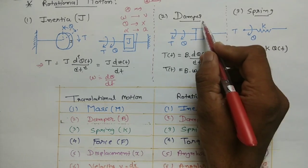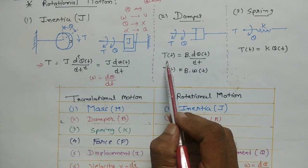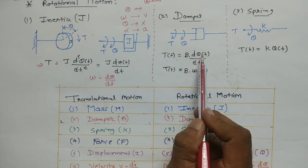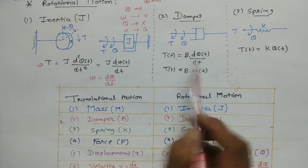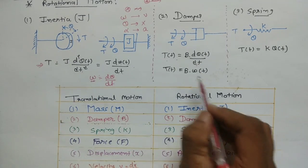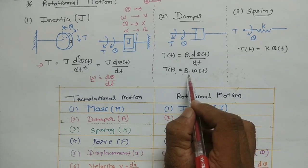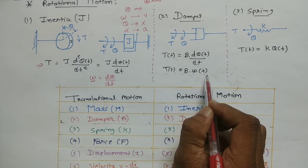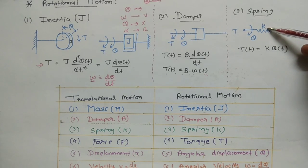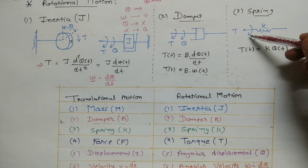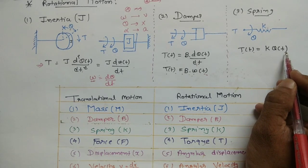For inertia J, the torque is given by: T(t) = J · d²θ(t)/dt². And angular velocity omega is written as dθ/dt. So the equation becomes: T(t) = J · d(omega)/dt. For the damper, the torque is given by: T(t) = B · dθ(t)/dt, and since dθ/dt equals angular velocity omega(t), we write T(t) = B · omega(t). For the spring: T(t) = K · θ(t), where K is the spring constant and θ is angular displacement.